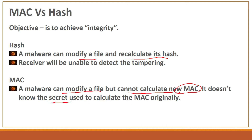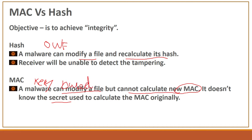The secret key is not accessible to malware, and the same secret key is supposed to be available at both the sender and the receiver to calculate the MAC. Basically, hash uses a one-way function to calculate the hash, while MAC is a key-based message authentication code.